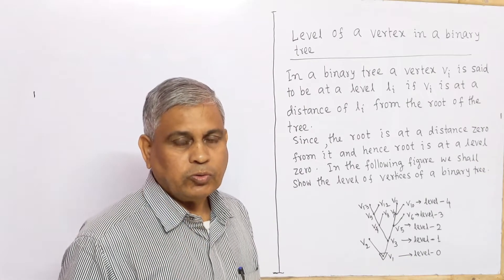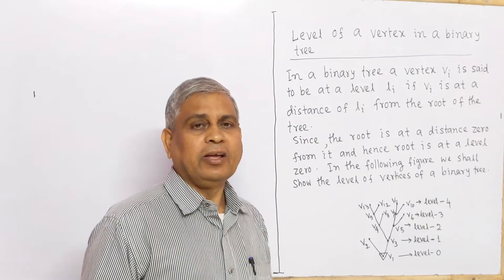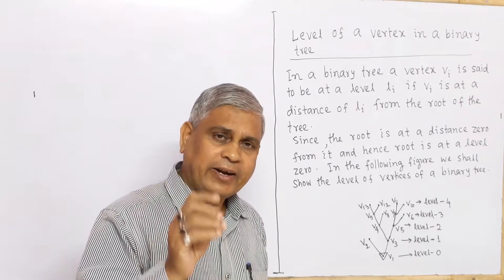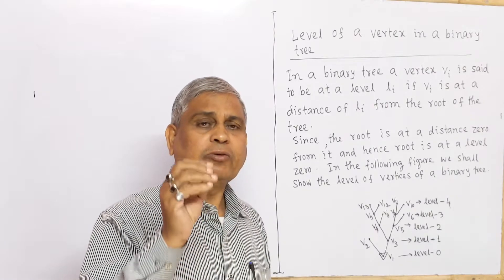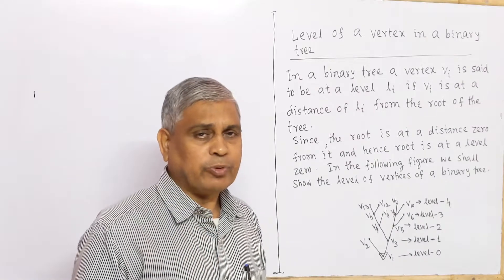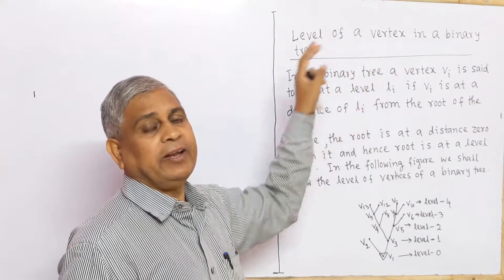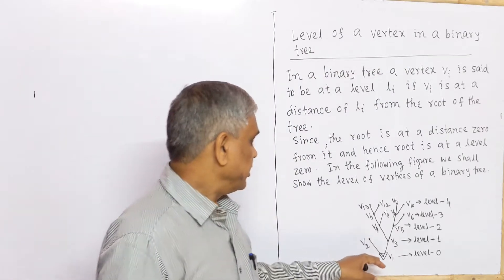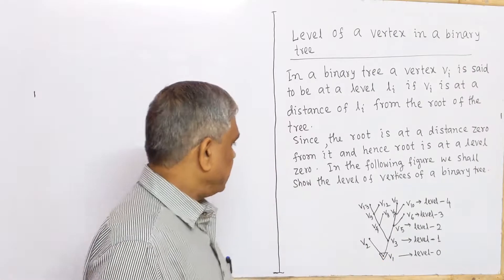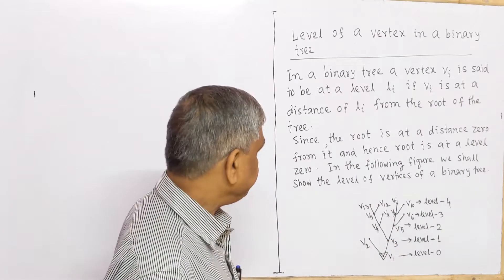We wish to know what is the level of a vertex in a binary tree. In a binary tree, exactly one vertex is of degree 2, and the vertex which has degree 2 is known as the root of the binary tree. Here, vertex V1 is of degree 2, and other vertices are of degree either 1 or degree 3.